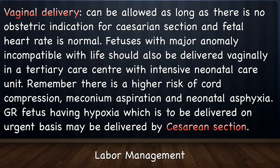Vaginal delivery can be allowed as long as there is no obstetric indication for caesarean section and fetal heart rate tracing is normal. Fetuses with a major anomaly incompatible with life should also be delivered vaginally in a tertiary care center with an intensive neonatal care unit. Remember there is a higher risk of cord compression, meconium aspiration, and neonatal asphyxia with vaginal delivery. Growth-restricted fetuses with hypoxia requiring urgent delivery may be delivered by caesarean section.